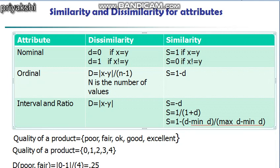In this table, x and y are two objects — you can consider them to be two students — compared on a single attribute of the indicated type, for example academic performance. D denotes the dissimilarity between x and y, and S denotes the similarity between x and y. The table summarizes all the formulas applicable for dissimilarity and similarity across different attribute types. In the next video, we will see how these formulas can be applied. Thank you very much.